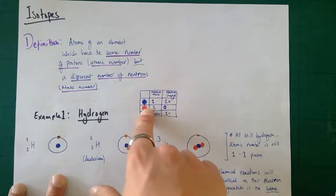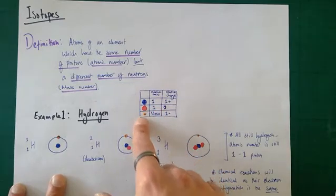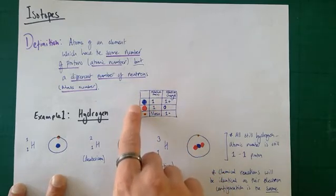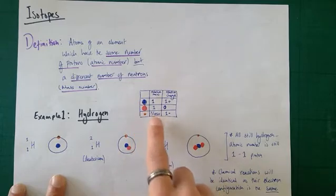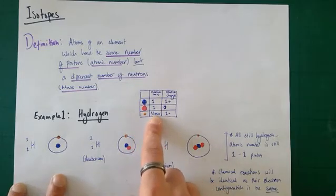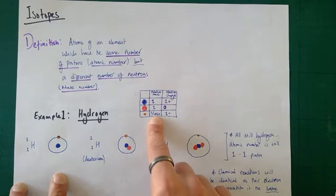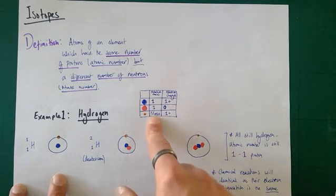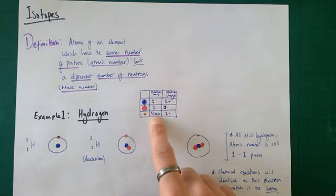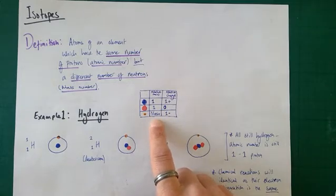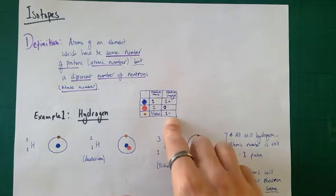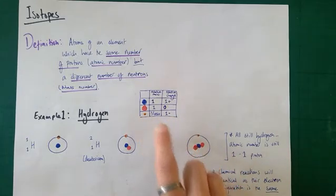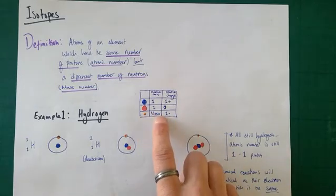Electrons are much, much smaller than protons and neutrons. Relative to the protons and neutrons, they have a mass of one over one thousand eight hundred and fifty — that means they are one thousand eight hundred and fifty times smaller. Therefore, their mass is essentially negligible, and you can quote it as being zero or one over two thousand. The charge of an electron is minus one. Don't forget the electrons are found orbiting the nucleus in shells.